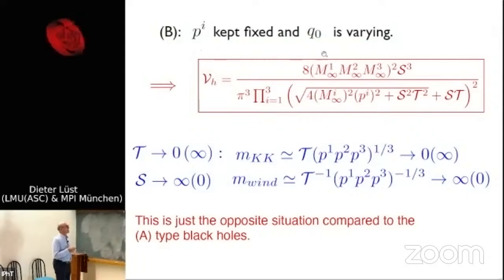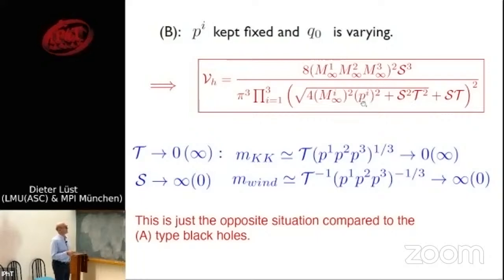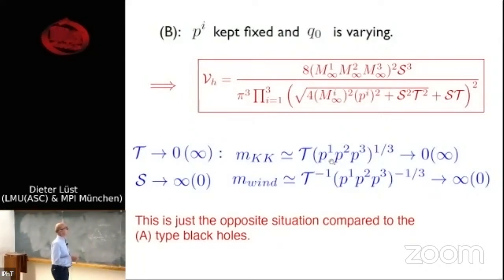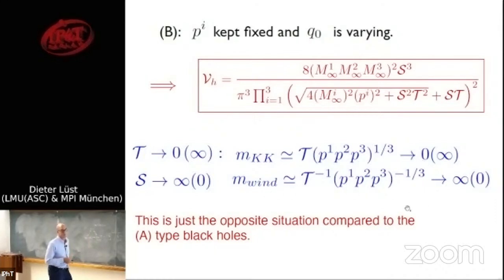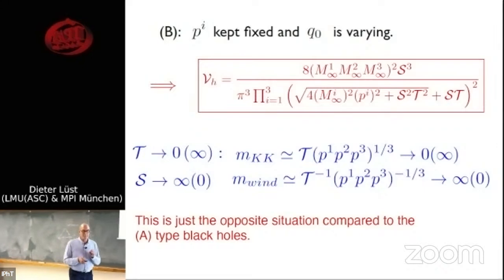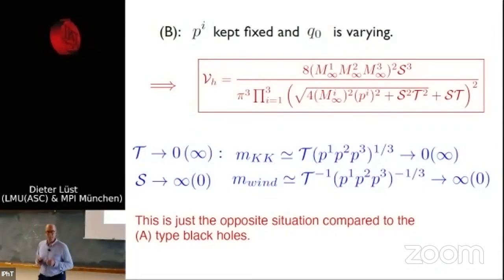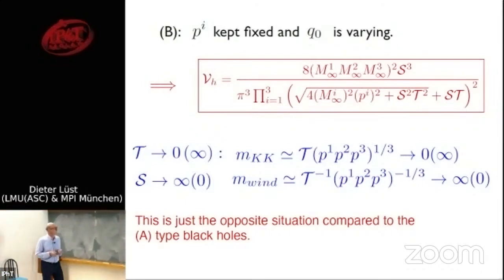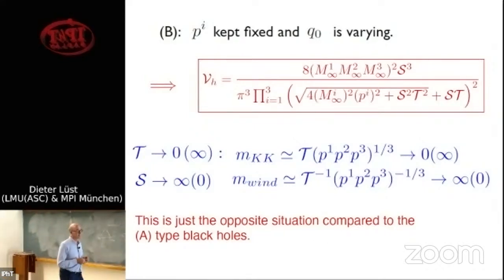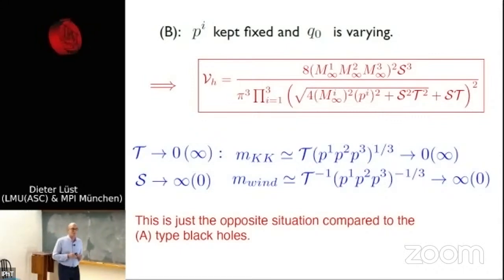In the opposite case, keeping the p^i fixed and varying q₀, the relation between the volume, entropy, and temperature is analogous but with the roles reversed: in the large entropy and temperature limit, the KK modes become light and winding modes become heavy, and vice versa — so these two cases are again dual to each other, exchanging winding and KK modes. This concludes the swampland discussion.